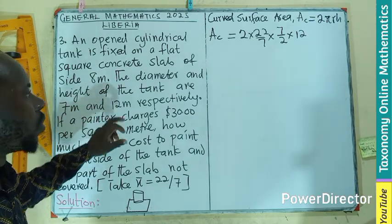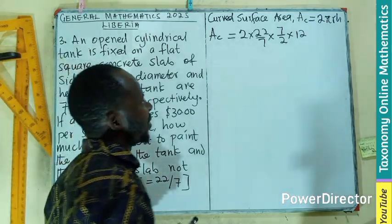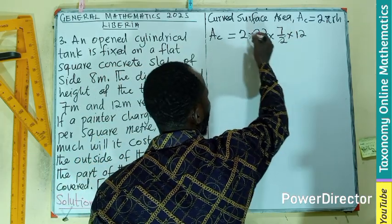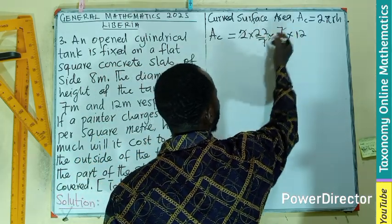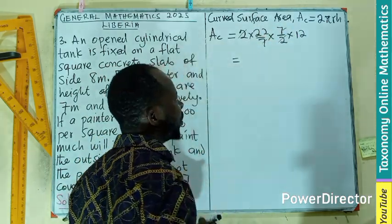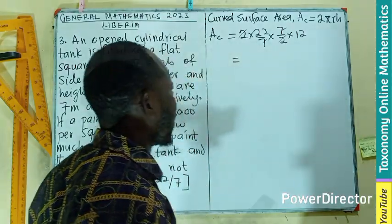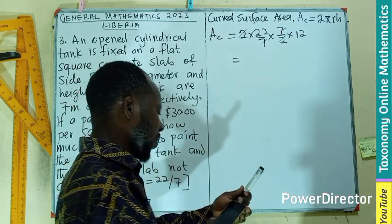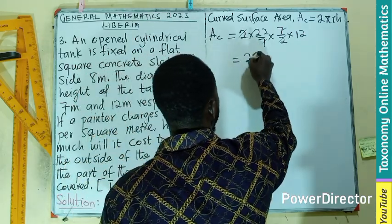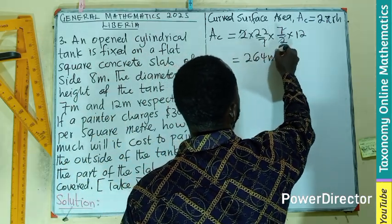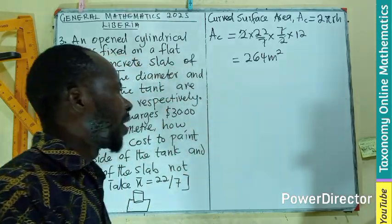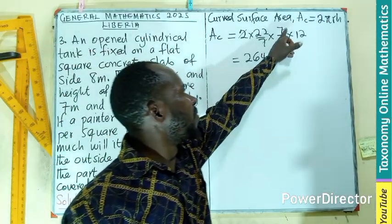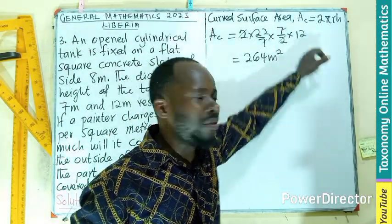These 2 will cancel this, these 7 will cancel this. I should be left with only 22 times 12. If you find that on the calculator, that will give you 264 meter squared. The meter squared is coming from 7 meters times 12 meters.